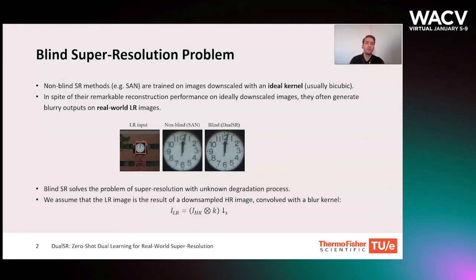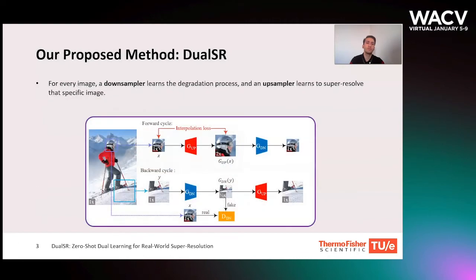In this work, we assume that the low-resolution input image is the result of downsampling a high-resolution image using a blur kernel. The goal is to reconstruct the high-resolution image from only the input low-resolution image.